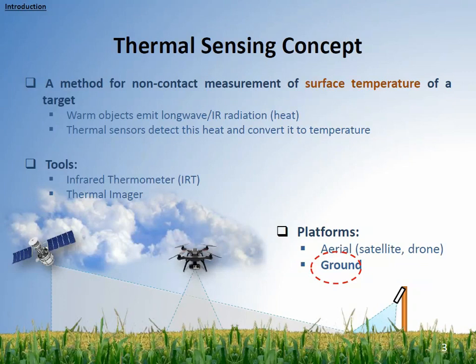Thermal sensing is a method for non-contact measurement of surface temperature of a target — it could be canopy or anything. Different tools are common for doing thermal sensing. We could use infrared thermometers or thermal imagers, and there are different platforms for doing that, like satellites, drones, or ground-based thermal sensing.